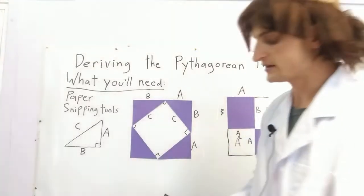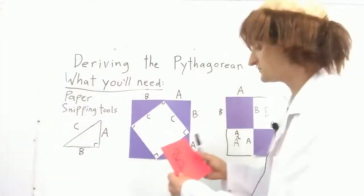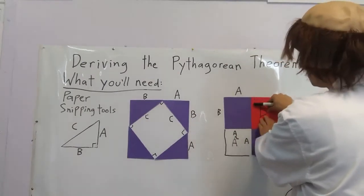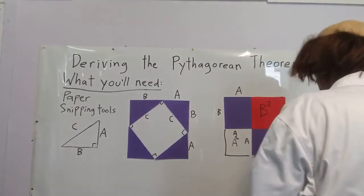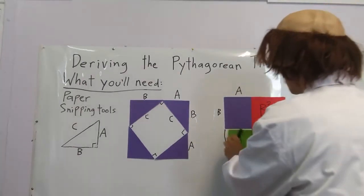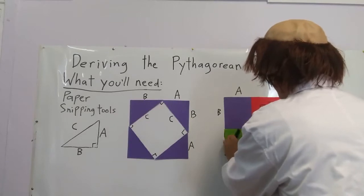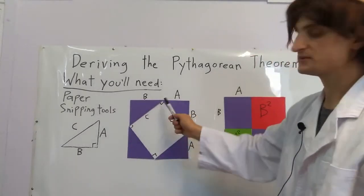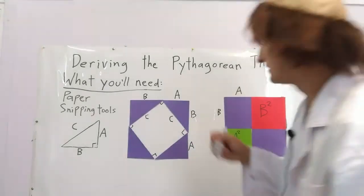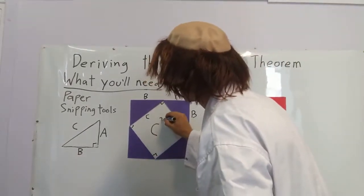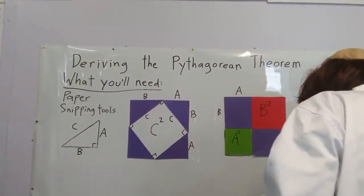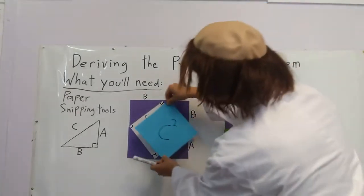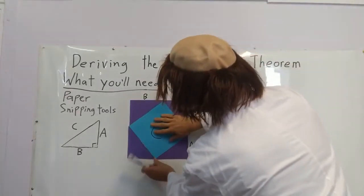If you want to, you can cut out the shapes and paste them — this is cut and paste without even using a computer. Now this is C times C. This is C squared. I can paste it right there.